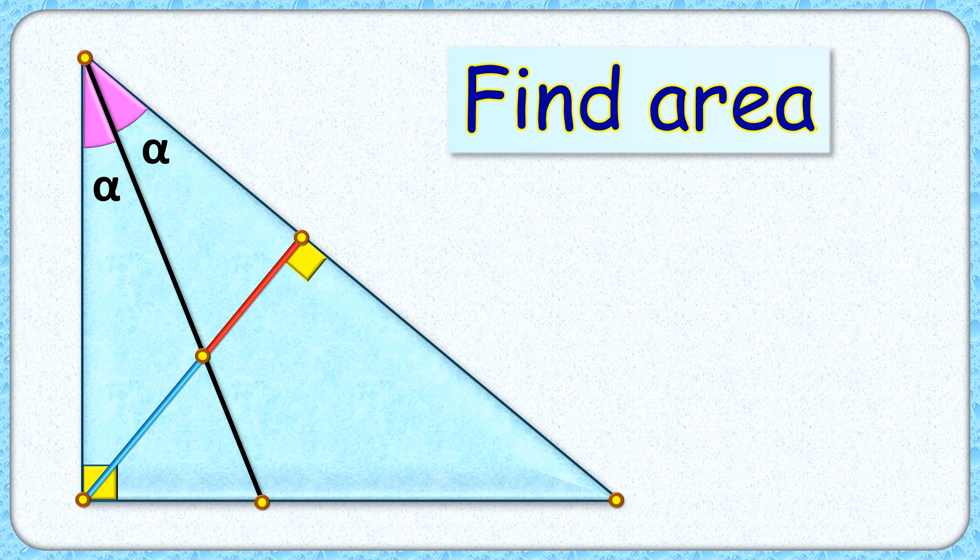In this interesting question, given is a right angle triangle ABC with AF as angular bisector and BD perpendicular from vertex B. The exciting part is that with this limited data, we have to find the area of the full triangle ABC.